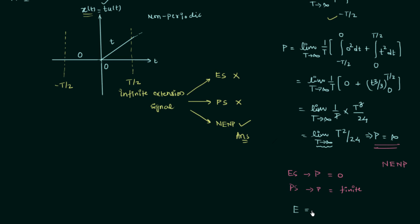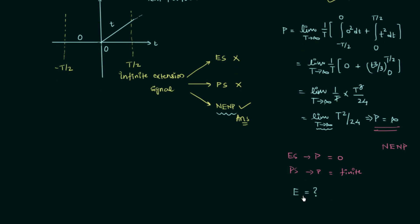The calculation of total energy is homework for you. It is not important here because we only needed to find out if the signal is an energy, power, or NENP signal, and the power calculation is sufficient. Using both methods — the waveform graph and the average power formula — we have confirmed the signal is neither energy nor power signal. Please post your total energy answer in the comments. See you in the next lecture.